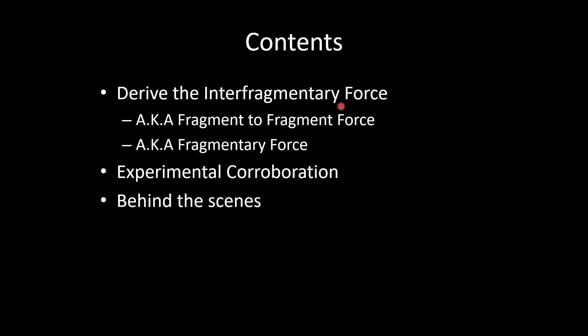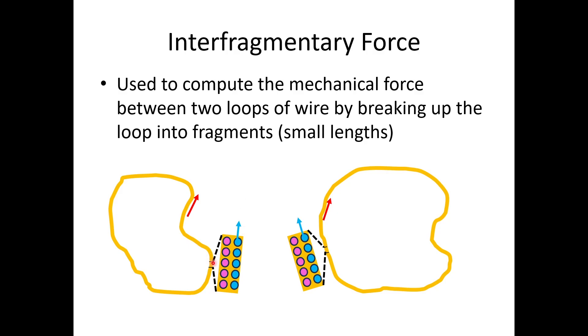The Interfragmentary Force Model is also called the Fragment to Fragment Force Model or the Fragmentary Force Model. It's the force between two fragments of wire that will then be used to compute the total force between two wire structures. If we take two loops of wire and we want to compute the total force between them, the first thing we do is break it up into little differential lengths that we call fragments. Then we compute the fragment to fragment effects, and then we sum all of those up to find the total force.